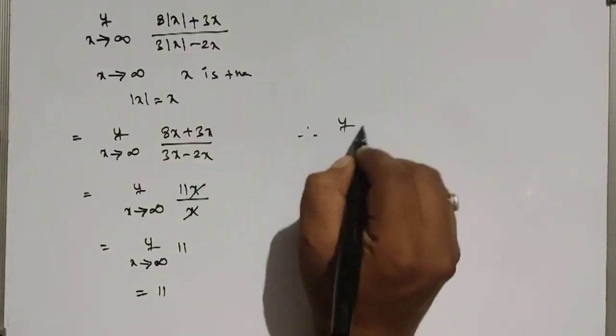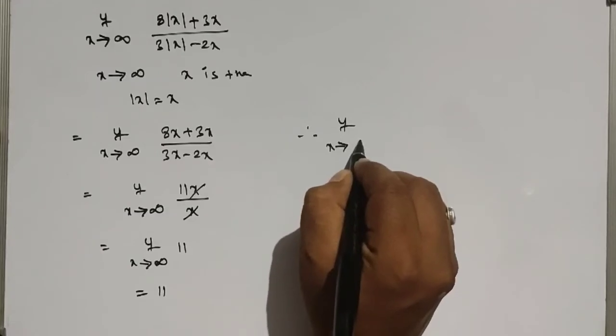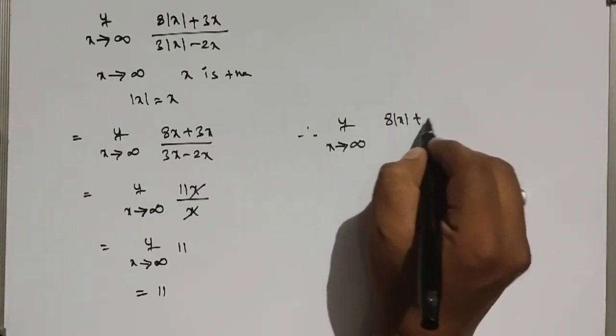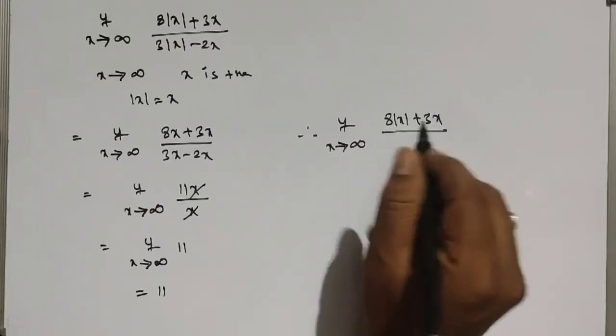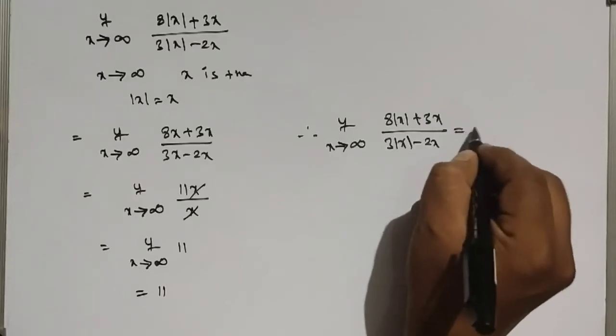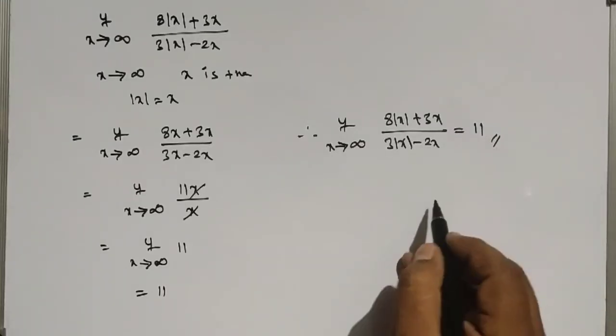Therefore, limit x tending to infinity of (8|x| + 3x)/(3|x| - 2x) is equal to 11. This is the answer.